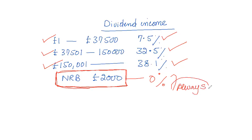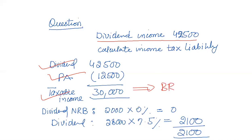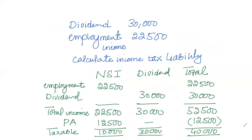The dividend nil rate band is always available regardless of whether the person is a basic rate taxpayer or an additional rate taxpayer. Now we'll calculate income tax liability on dividend income. Dividend income is £42,500 and as there is no other income, the personal allowance is available. After deduction of personal allowance, taxable income is £30,000. Being basic rate income, first £2,000 is taxed at zero percent, then the remaining £28,000 at 7.5%, giving total income tax liability of £2,100.